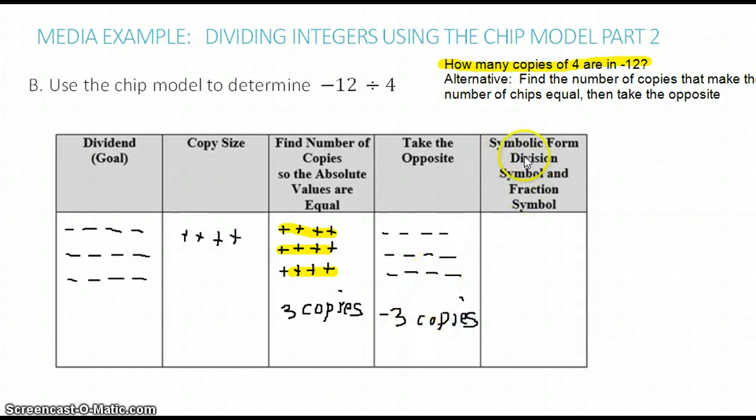Now let's write this in symbolic form. Negative 12 divided by positive 4 equals negative 3. In fraction form, the dividend goes on top, the divisor goes on the bottom, and the quotient our result is negative 3.